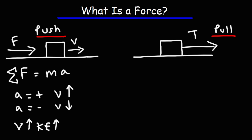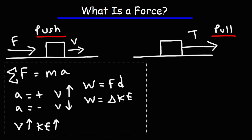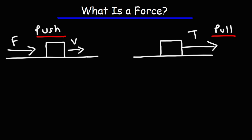So what this force is doing — by pushing the object to the right — it's transferring energy to this object. That's what forces do: they transfer energy to an object. That's how energy is transferred — by means of forces. The work done by this force is equal to the force times the displacement of the object. The work done is also equal to the change in kinetic energy, so it's equal to the final kinetic energy minus the initial kinetic energy.